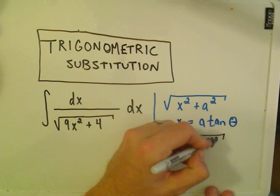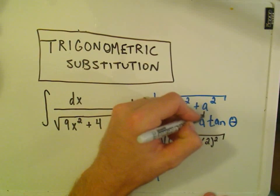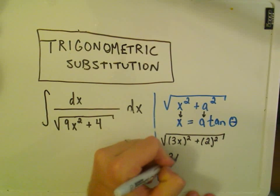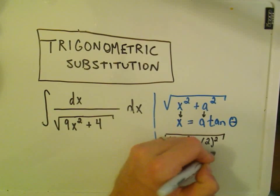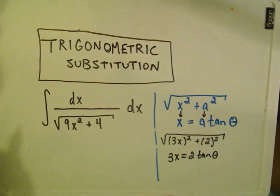Plus 2 squared. So here it says we use x equals a tangent theta. Here my substitution is going to be 3x equals 2 tangent theta. So that'll be my initial substitution to help me get going here.